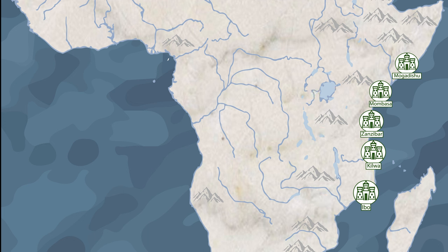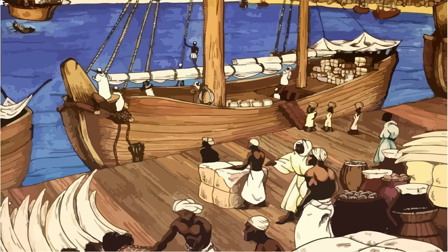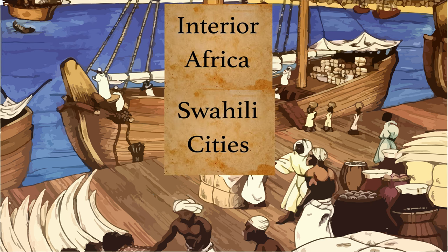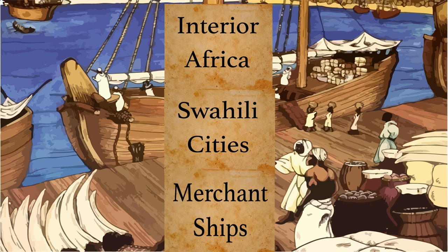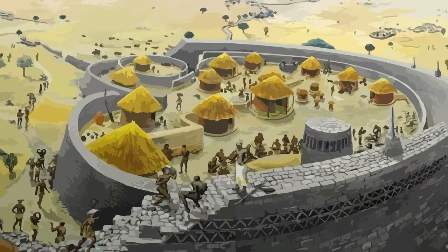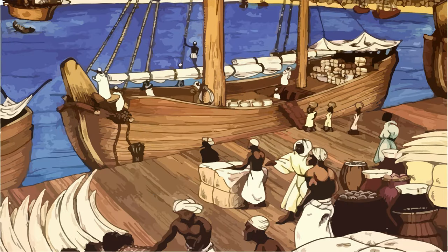The Swahili city-states acted as a sort of intermediary for trade. Goods came from the interior of Africa along the coast to be sold — the city-state of Sofala was even able to collect goods from Great Zimbabwe. The city-states simply had merchants and vendors pay duties on imports and exports. In the other direction, goods came from Arabia, Persia, and India, and through these places, goods even came in from China and Southeast Asia to be bought and sold.